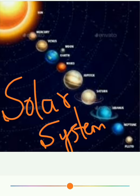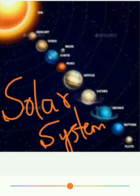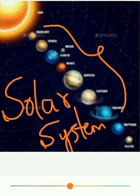See students, in solar system we saw 8 planets now. The 8 planets of the solar system in the order of their distance from the sun are: first Mercury, second Venus, Earth, Mars, Jupiter, Saturn, Uranus and Neptune.